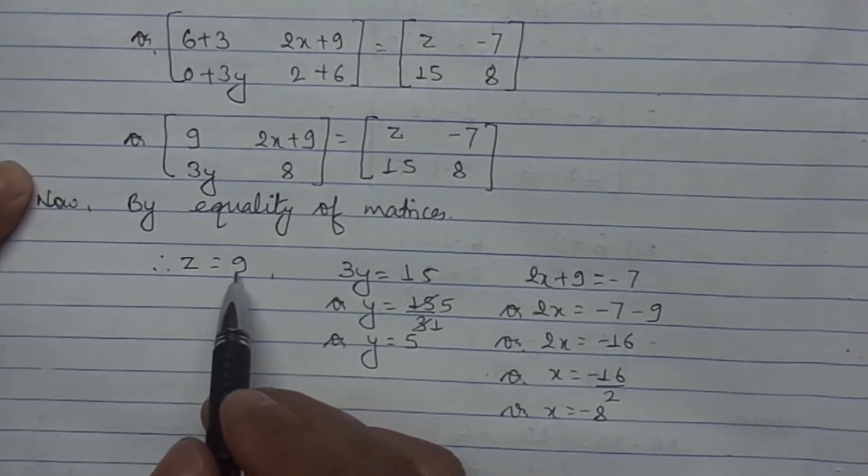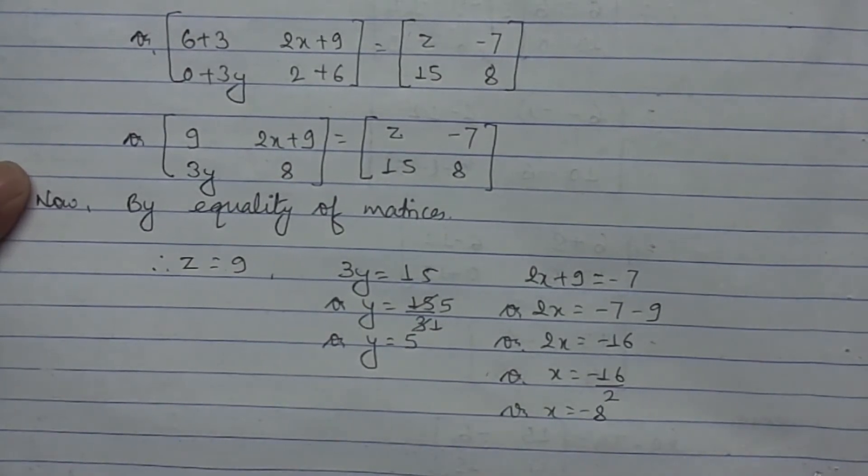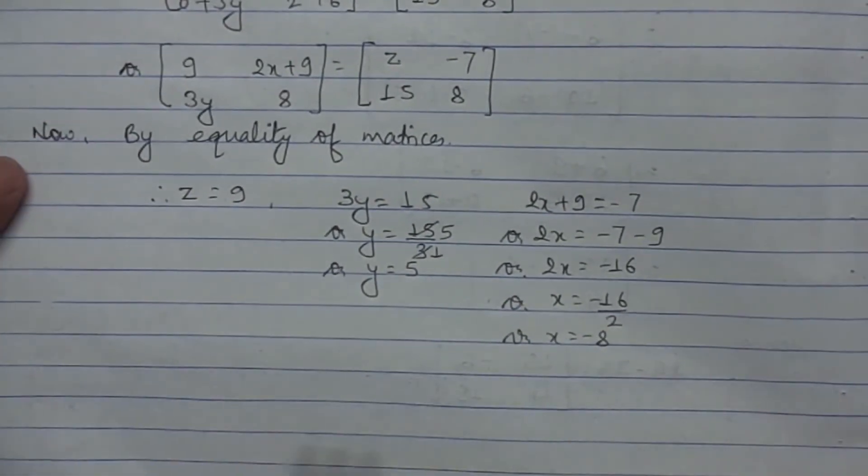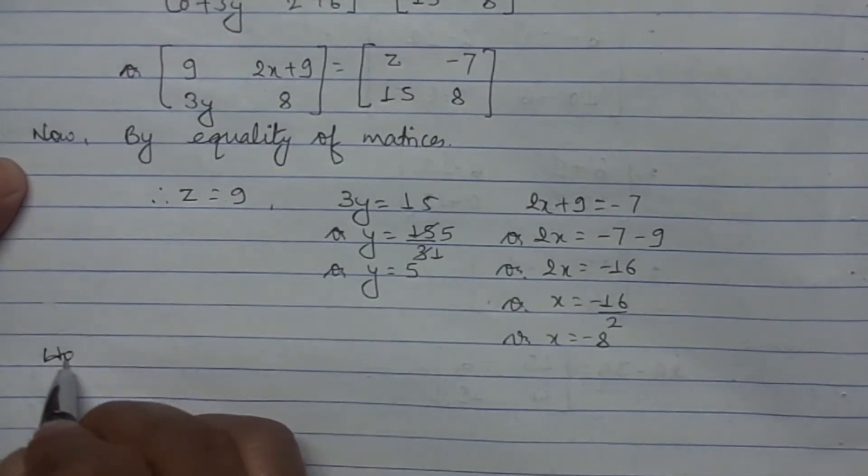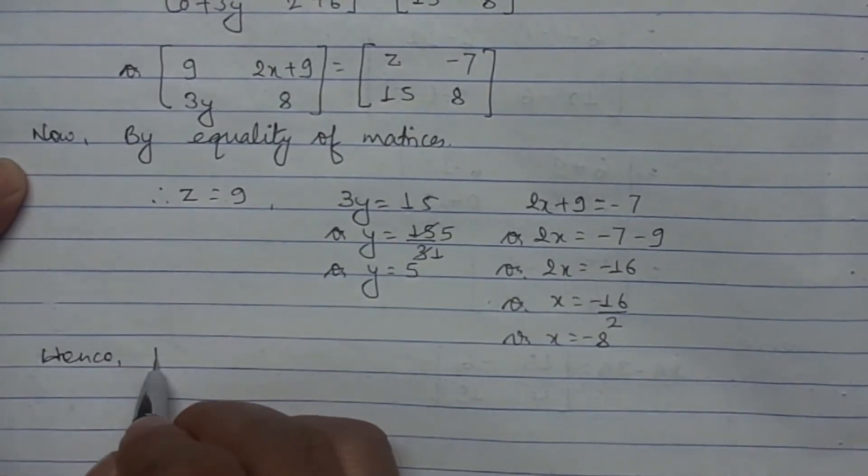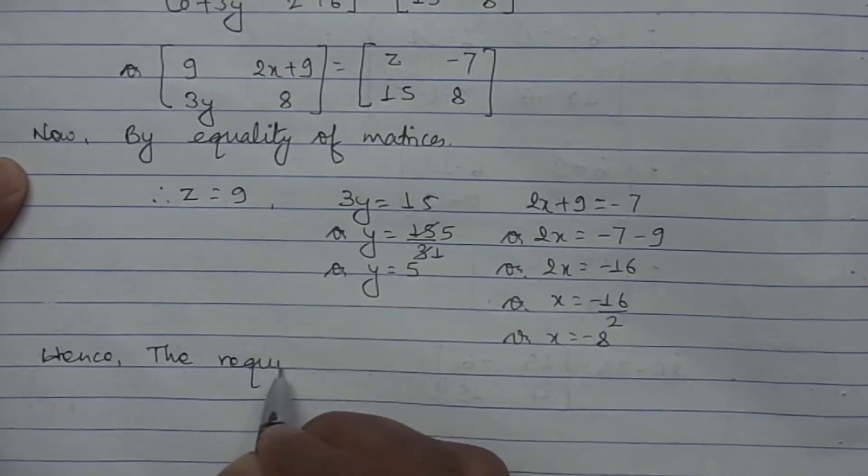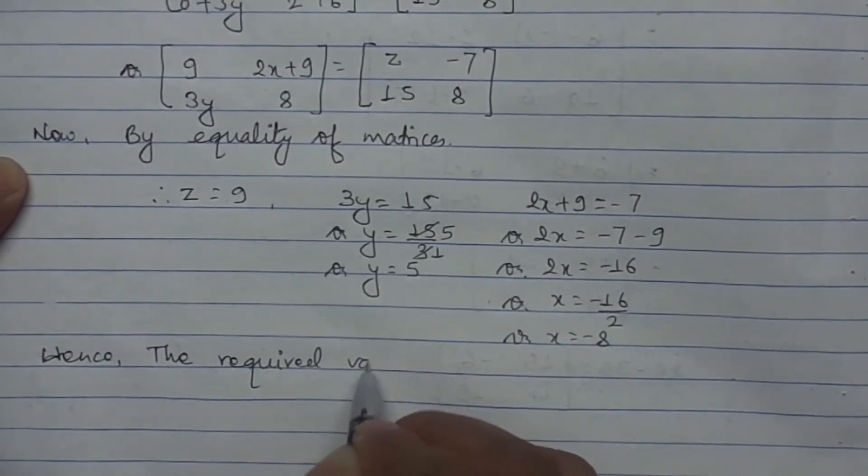The value of z is 9, value of y is 5, and value of x is -8. Now we need to write the conclusion. Hence, the required value of x, y, and z.